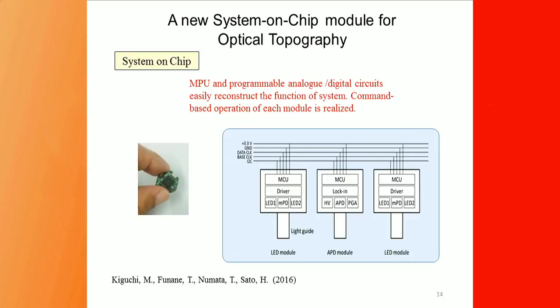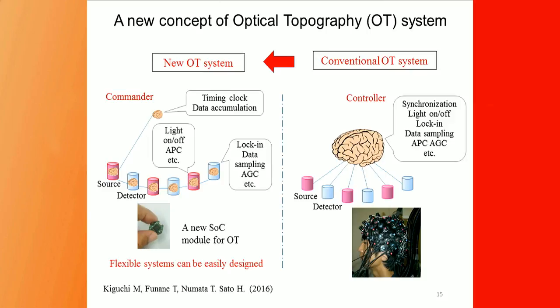Recently, we also developed a new system-on-chip module for optical topography, because we need to change the optical tool distances. This chip device was applied to designing various kinds of optical topography. For conventional OT systems, there is a separate controller, but in the new OT systems the controller is included on-chip, allowing various free configurations to be achieved.